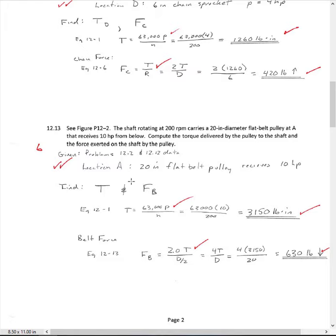So we have to find torque and the force in the belt. Again, we're coming in at 10 horsepower. 63,000 times 10 divided by 200 is 3,150 pound inches. And then the belt force, we got that from equation 12-13 with this equation right here. And what we end up with is 630 pounds acting downward.